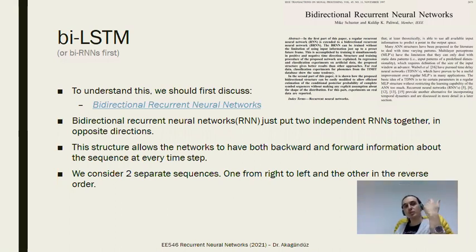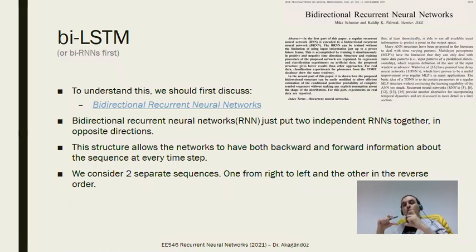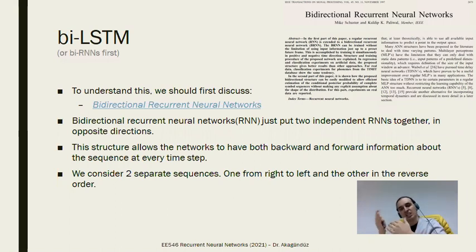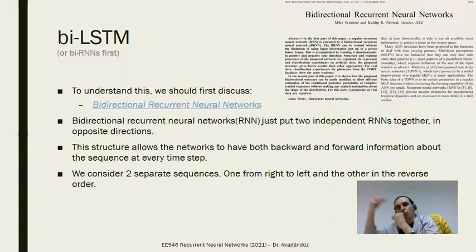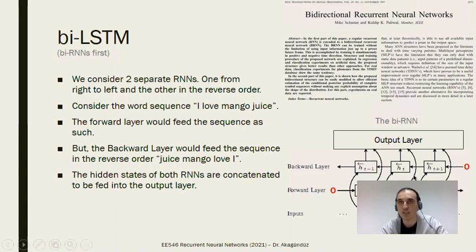In a bidirectional RNN, the two independent networks run in opposite directions. While you feed the input sequence to one in the forward direction, you feed the same sequence to the other in the opposite direction, and you obtain the output as a combination of both. It's like feeding two separate sequences — one the reverse of the other — simultaneously to two separate LSTMs, combining their outputs at each step. It's a very simple idea but it works very well for some applications.